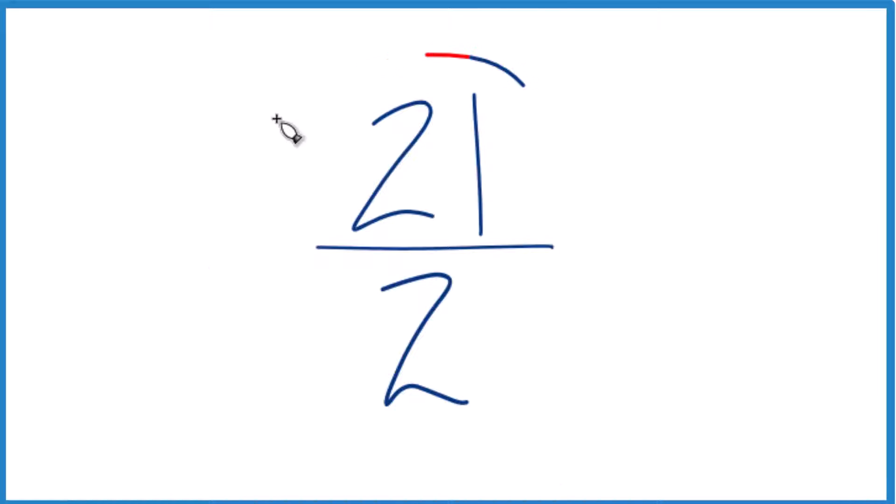If you're asked to write the fraction 21 over 2 as a decimal, here's how you could do it.